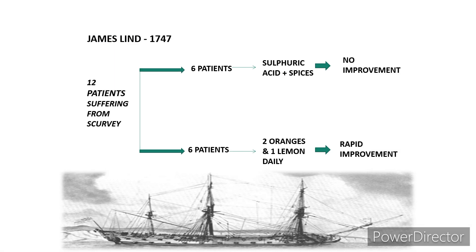James Lind took 12 patients suffering from scurvy and divided them into two groups of six. To one group he gave sulfuric acid along with some spices, and to the other group he gave two oranges and one lemon daily. After a few days there was no improvement in those who took sulfuric acid and spices, but those who took oranges and lemon showed rapid improvement.